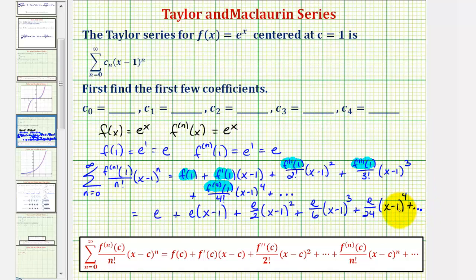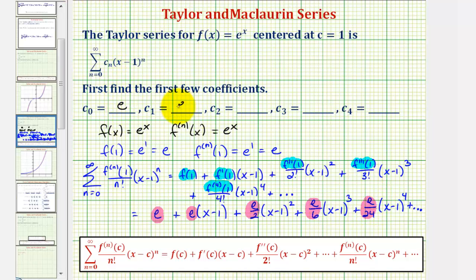We now have enough terms to find c sub zero through c sub four. c sub zero equals e, c sub one equals e, c sub two equals e divided by two, c sub three equals e divided by six, and c sub four equals e divided by 24.